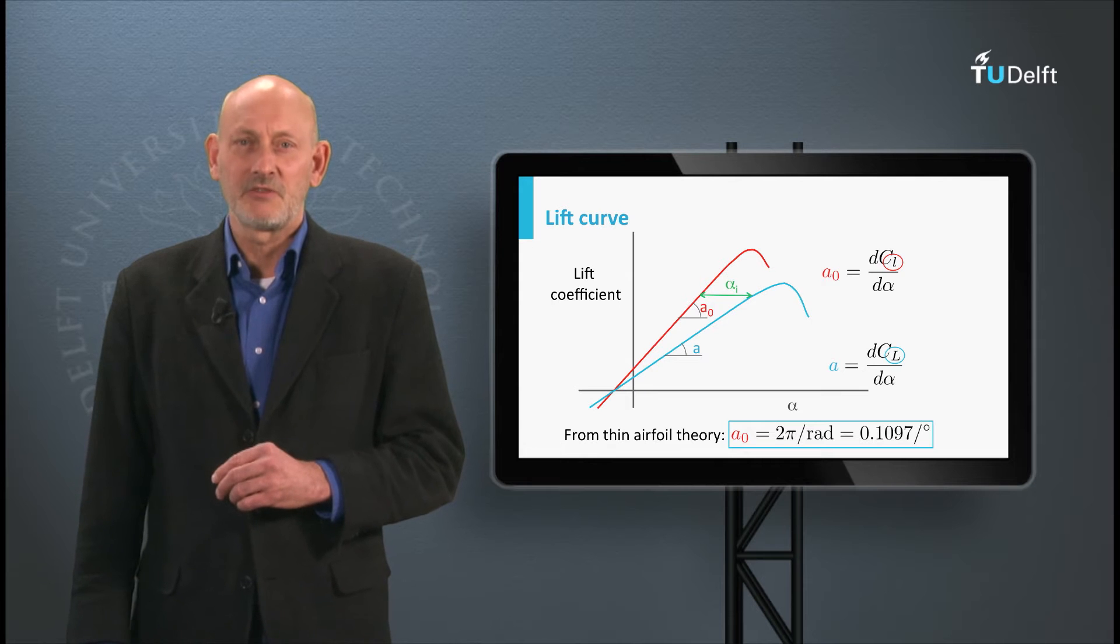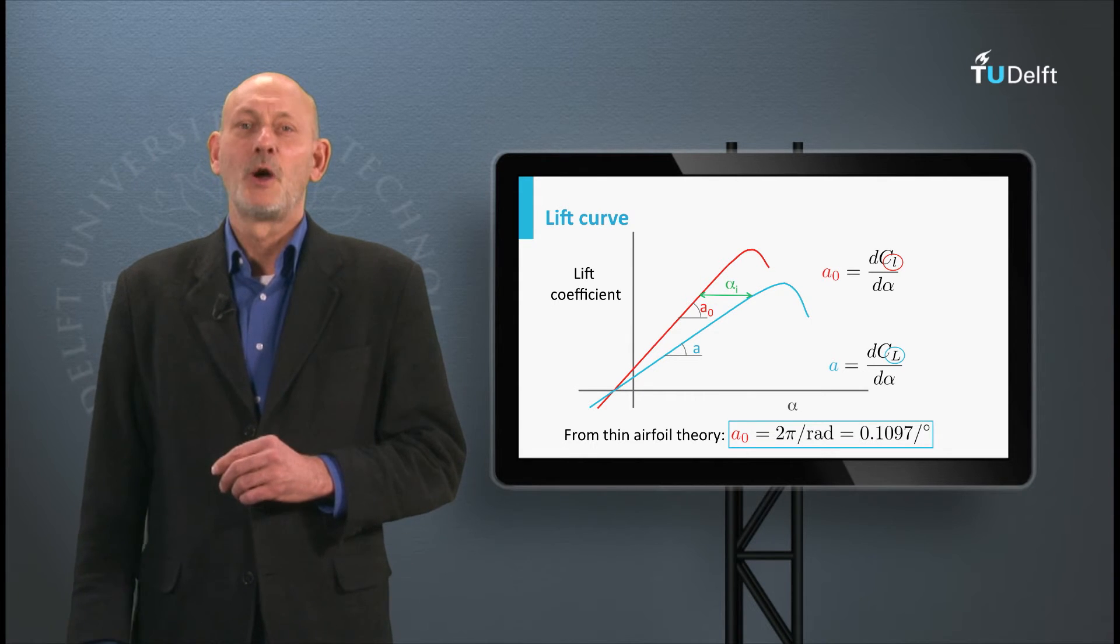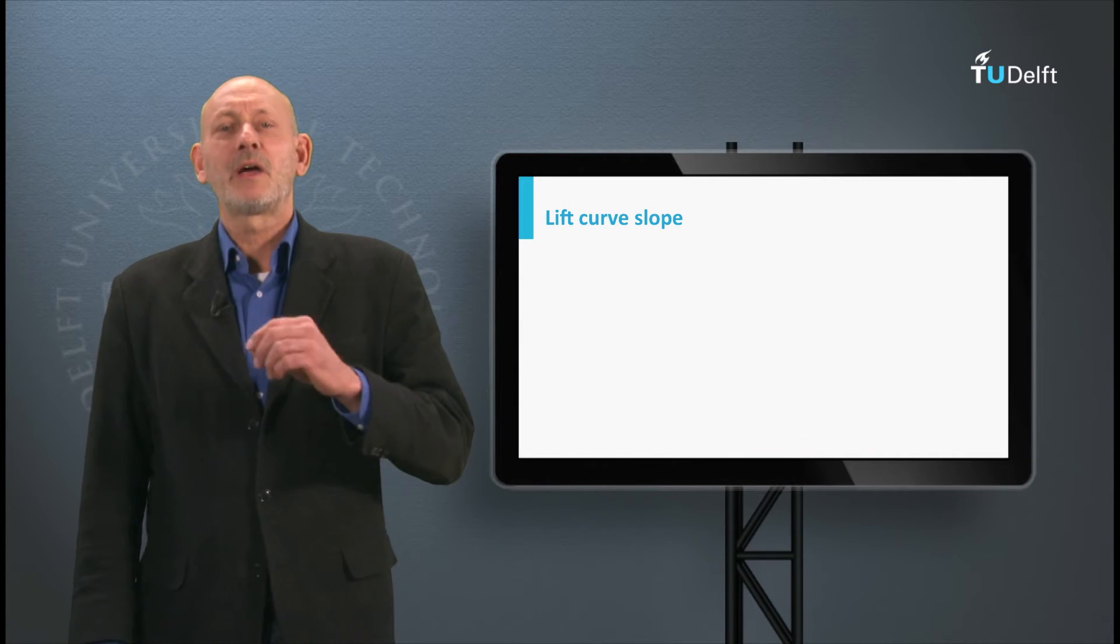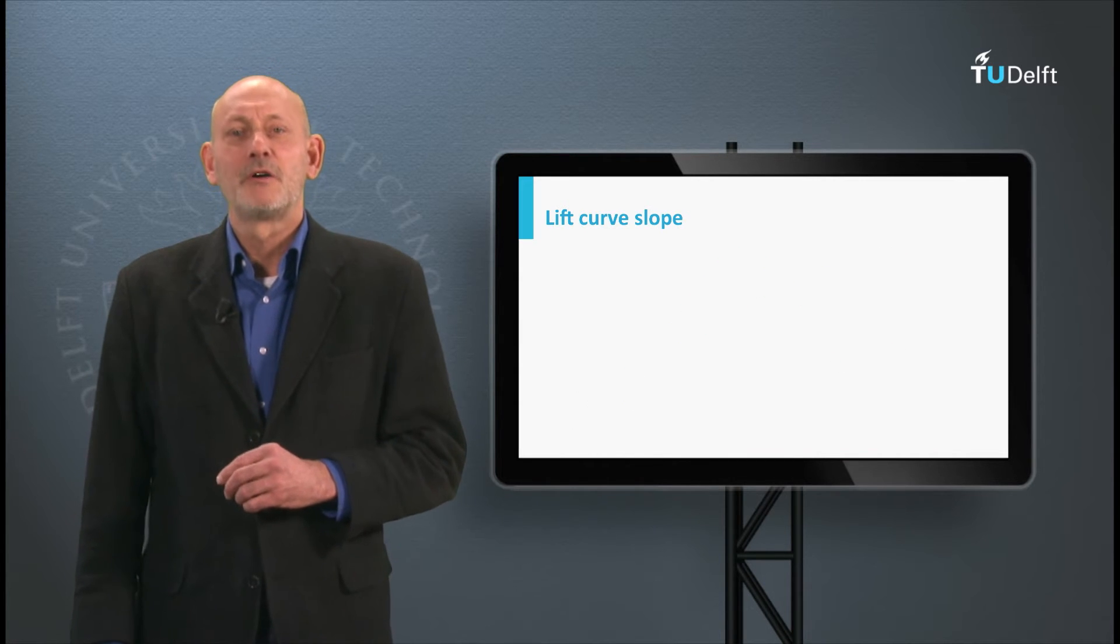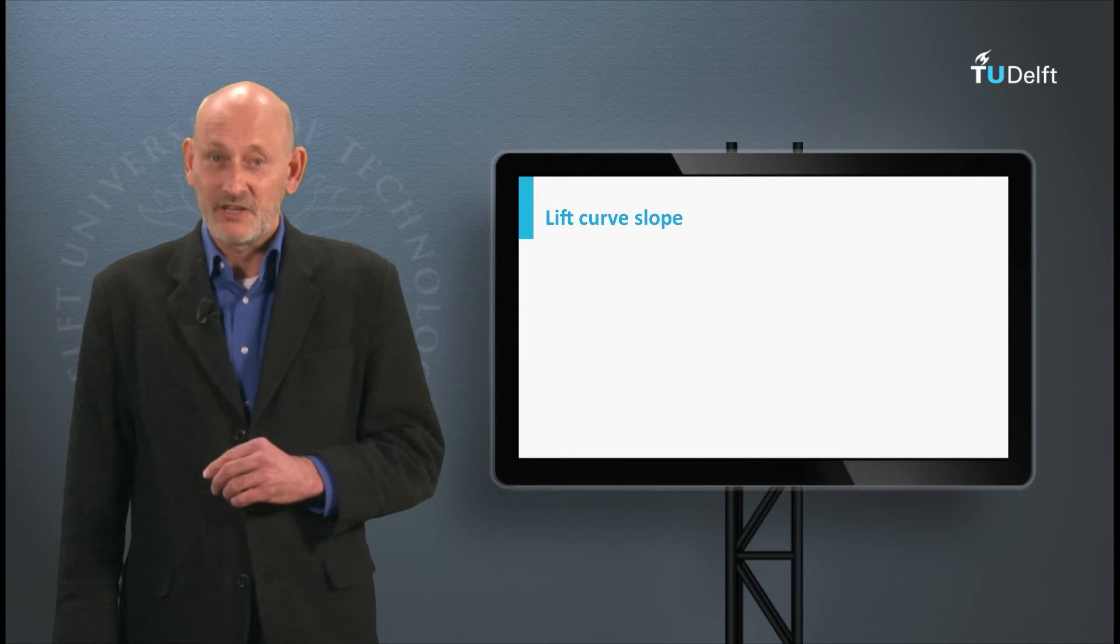Since at CL is 0 there are no induction effects, both curves have the same zero lift angle. How can we determine the wing lift slope from the original airfoil lift curve?